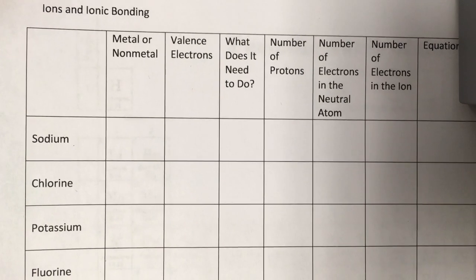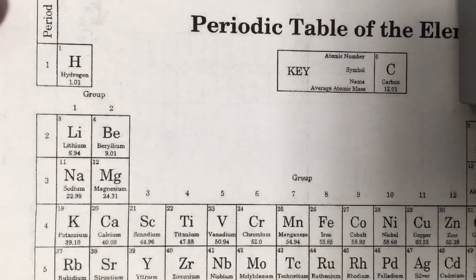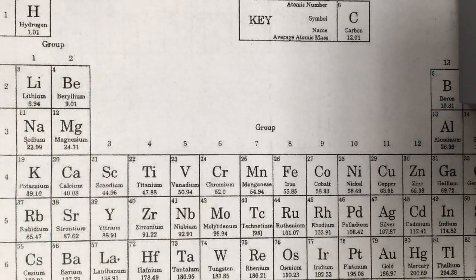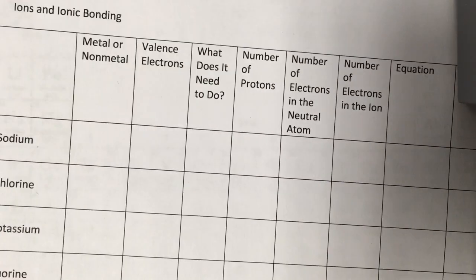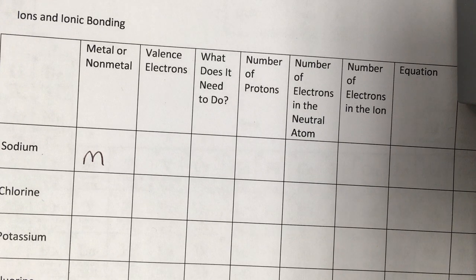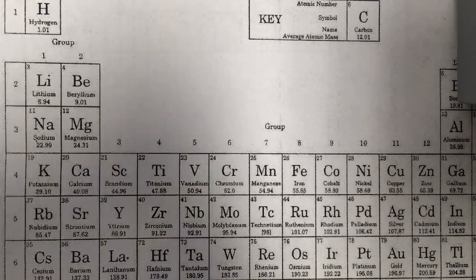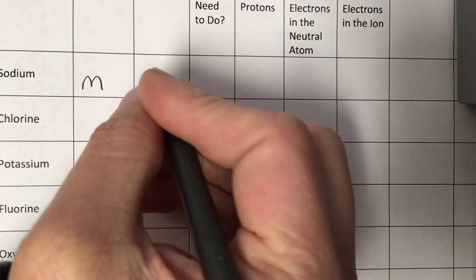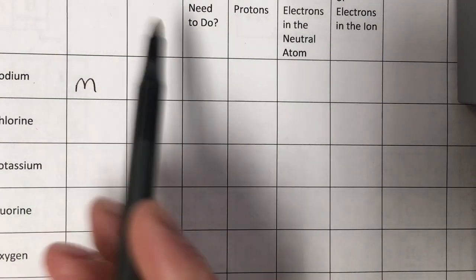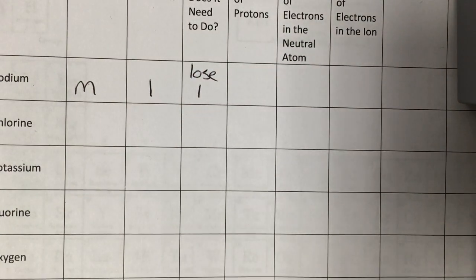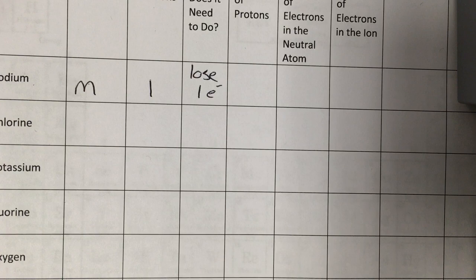So let's start with sodium. First thing we need to do is figure out if it is a metal or a non-metal. Well, there it is. The metalloids are over here. It's definitely to the left of the metalloids. That makes it a metal. Next thing up is valence electrons. There is sodium in group one. As we know, the members of group one have one valence electron. Now, because it's a metal, it has to lose all of its valence electrons in order to become stable. And that's what it's going to do in ionic bonding. It's going to lose one electron.